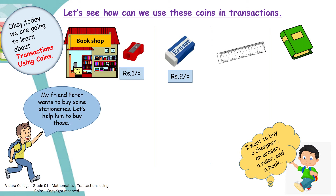Very good. Now let's go to the next one. It's a ruler — how much is it? Yes, it's 5 rupees. Very good. Now let's go to the next one. There is a book — how much is it? It's 10 rupees.